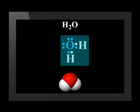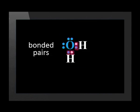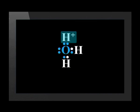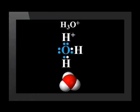Water has two bonded pairs of electrons and two lone pairs. When a hydrogen ion bonds with one of these lone pairs, a coordinate covalent bond is formed within the hydronium ion.